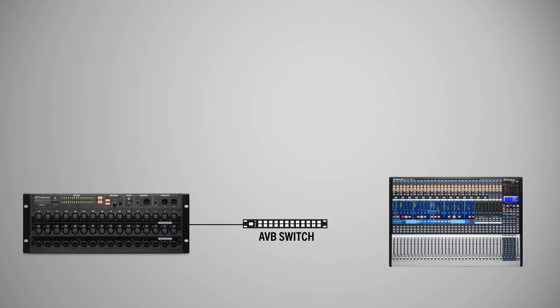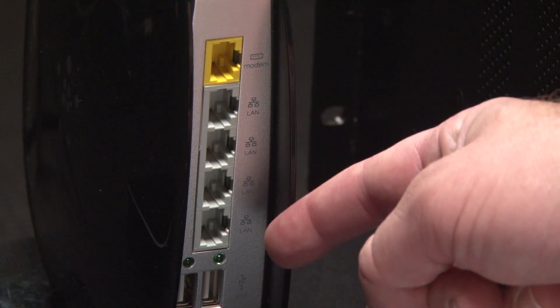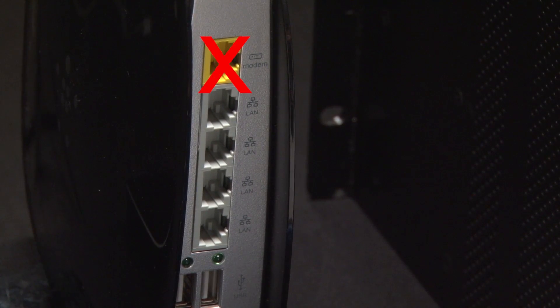When using an AVB switch and a router, you can leave the RM mixer and AI console mixer in the default dynamic IP address mode. With this configuration, connect both mixers to the AVB switch. Also connect the router to the AVB switch using one of the router's local area network or LAN ports, not the wide area network or WAN internet port. Any wired control devices such as a computer can be connected to either the AVB switch or the router LAN ports. Wireless control devices will connect to the router's wireless access point.